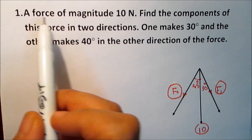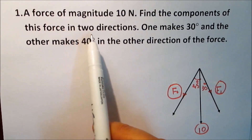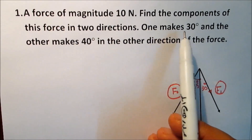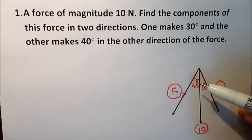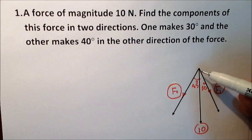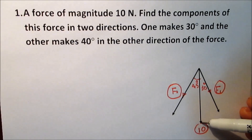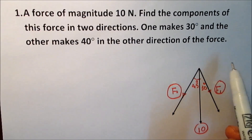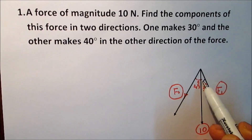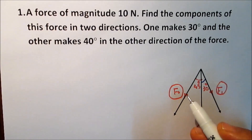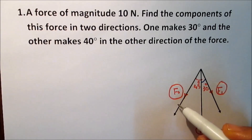Example 1: a force of magnitude 10 newtons — find the components of this force in two directions. One makes 30 degrees and the other makes 40 degrees with the direction of the force. We sketch the forces: the force of magnitude 10 newtons needs to be resolved into two components. F1 makes 30 degrees and F2 makes 45 degrees with the direction of the force.